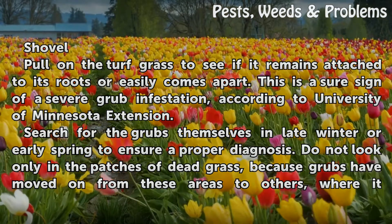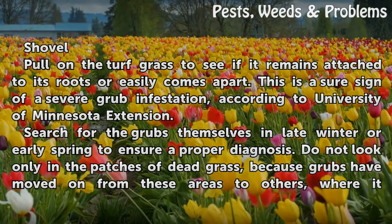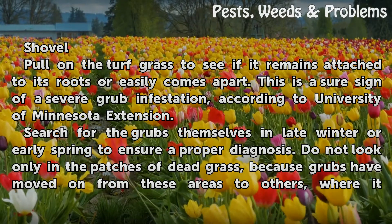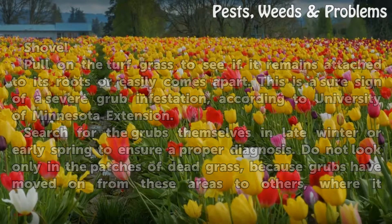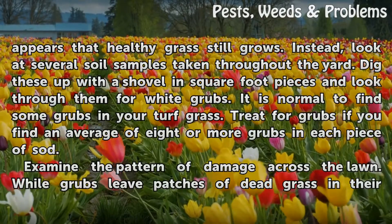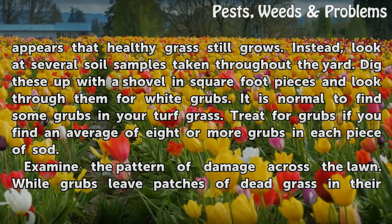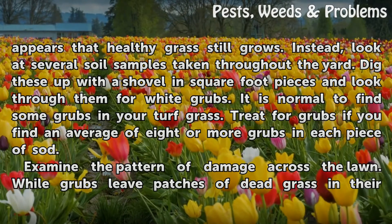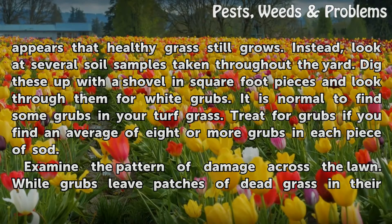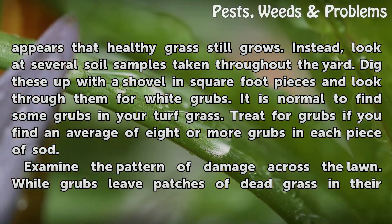Search for the grubs themselves in late winter or early spring to ensure a proper diagnosis. Do not look only in the patches of dead grass, because grubs have moved on from these areas to others where it appears that healthy grass still grows. Instead, look at several soil samples taken throughout the yard. Dig these up with a shovel in square-foot pieces and look through them for white grubs. It is normal to find some grubs in your turf grass — treat for grubs if you find an average of 8 or more grubs in each piece of sod.